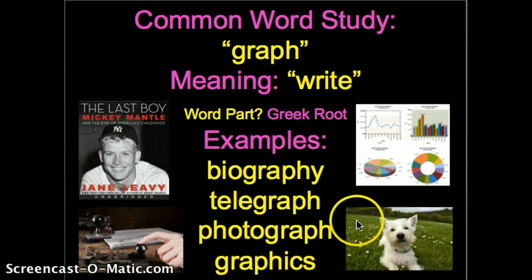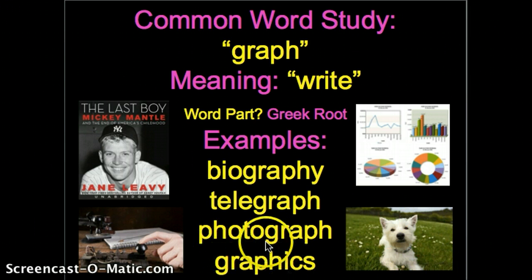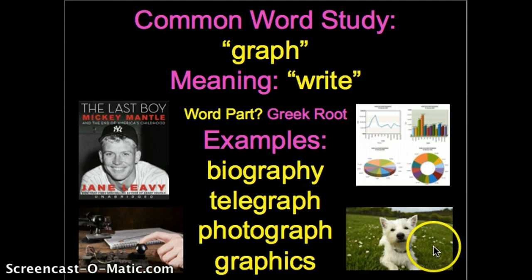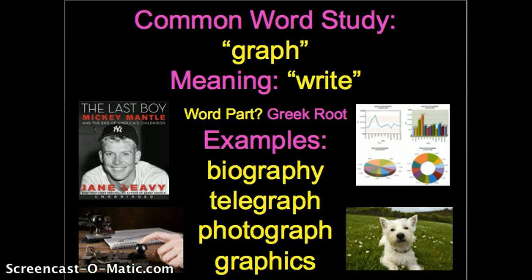Photograph is the next word. Look at this cute little dog — isn't he adorable? That is a photograph of a dog. Now you might think it's not written about the dog. Photo means light — we haven't had that one yet, but photo means light. So a photograph is an image captured using light on a negative, and from there an image is created of whatever is being photographed through the lens. In this case it is a cute little Jack Russell terrier, but a photograph is an image captured, or written if you will, on a negative and then printed.